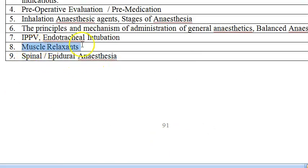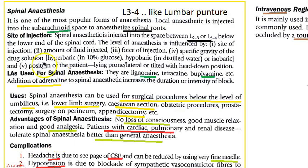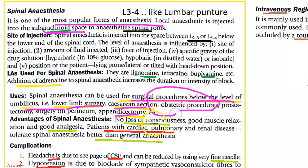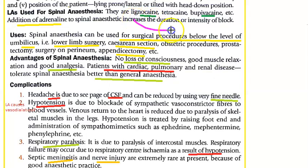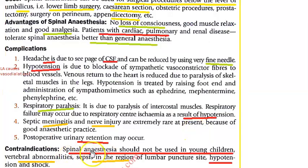Now spinal and epidural anesthesia. Spinal anesthesia is very popular — it is injected into the subarachnoid space and used for surgical procedures below the umbilicus: lower limb surgery, cesarean section, appendectomy, and obstetric procedures. There is no loss of consciousness, so patients with cardiac, pulmonary, or renal issues tolerate it better than general anesthesia. Drugs used include lignocaine and bupivacaine, with adrenaline added to increase duration and intensity. It should not be used in young children.